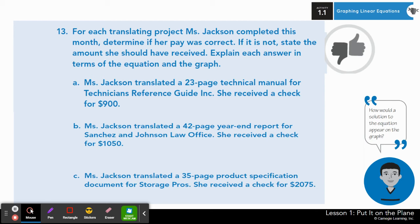Alrighty, moving on for our final question. It says, for each translating project Ms. Jackson completed this month, determine if her pay was correct. If it is not, state the amount she should have received. Explain each answer in the terms of the equation and the graph. Now, I want you to read each of these A, B, and C on your own. And in the next three to four minutes, you're going to determine if her pay was correct. You can use your equation or your graph. Hint, hint, graph to me is a little easier. All right, take about three minutes to answer A, B, and C. Pause here.